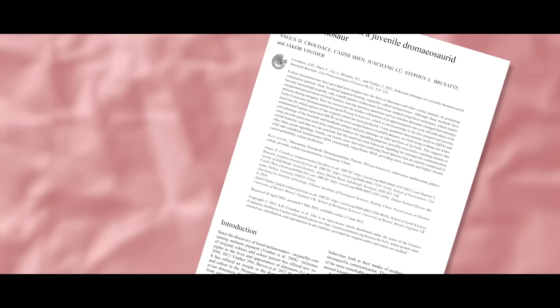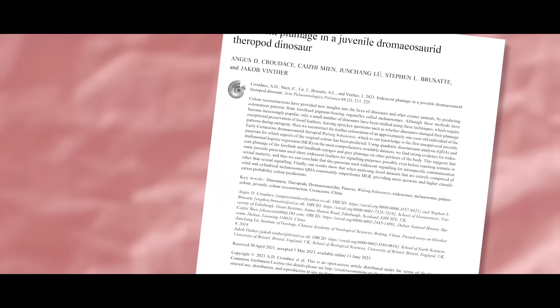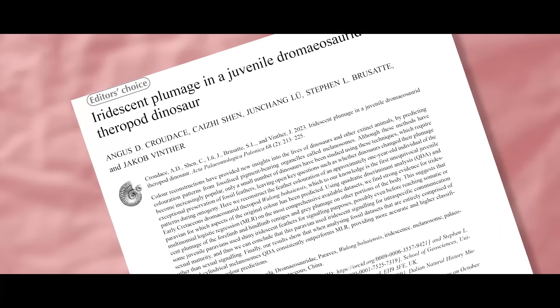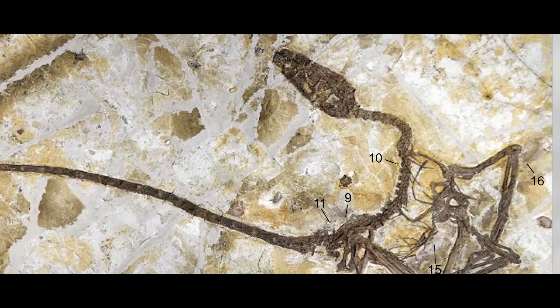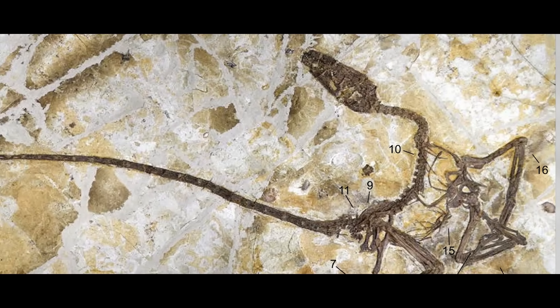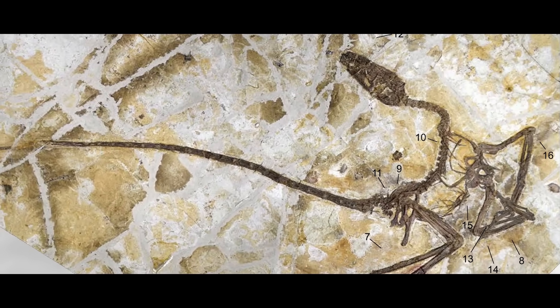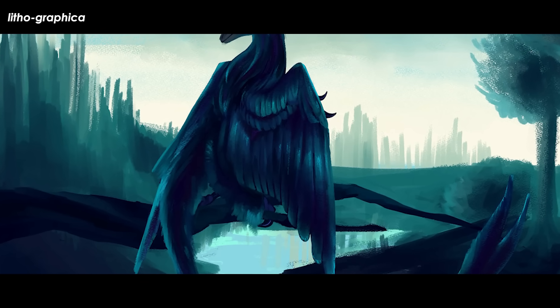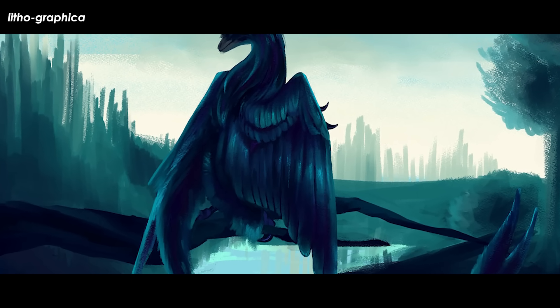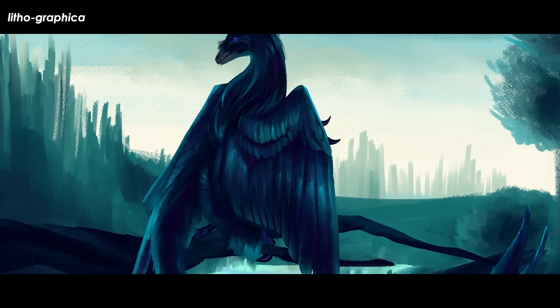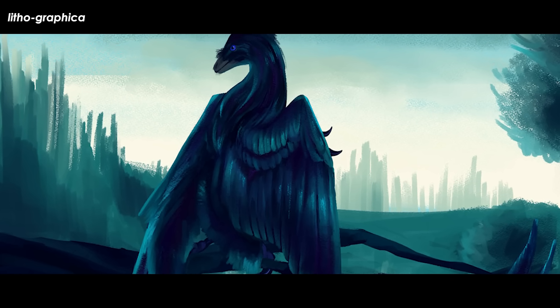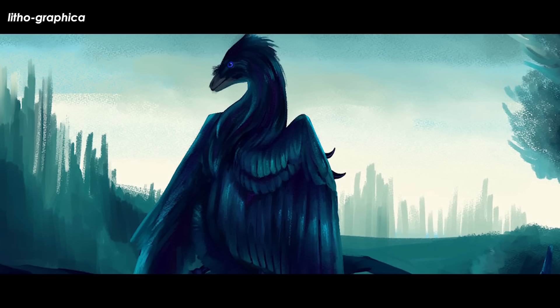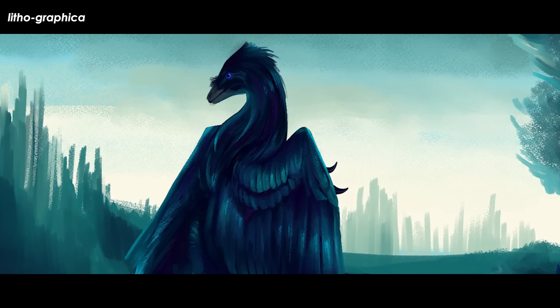A study was published in Acta Paleontologica Polonica in June of 2023 by a team that included Angus Crowdes, Kaiji Shen, Jungchang Lu, Stephen Brussati, and Jacob Vinther on a previously described specimen of a Microraptorian dromaeosaur dinosaur that was found by a farmer in layers of the fossil-rich Zhefotang formation of Xiaoyang, Liaoning Province, China. This critter was described in 2020 as Wulong bohaiensis, and the single known specimen preserves basically the entire skeleton plus a bunch of plumage, showing it to have been quite similar to the four-winged Microraptor, but with a forked tail fan and a slightly longer snout. The 2023 study reanalyzed the specimen to attempt to reconstruct the plumage coloration.